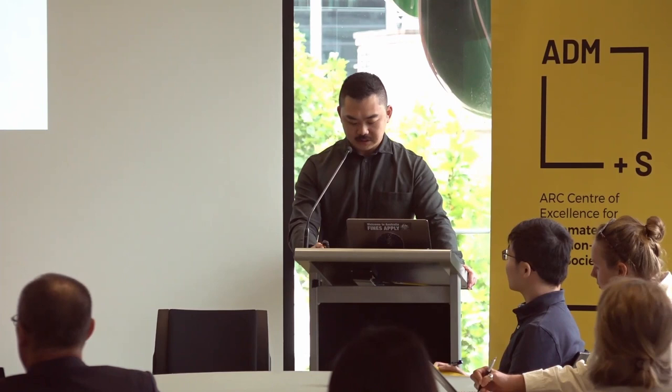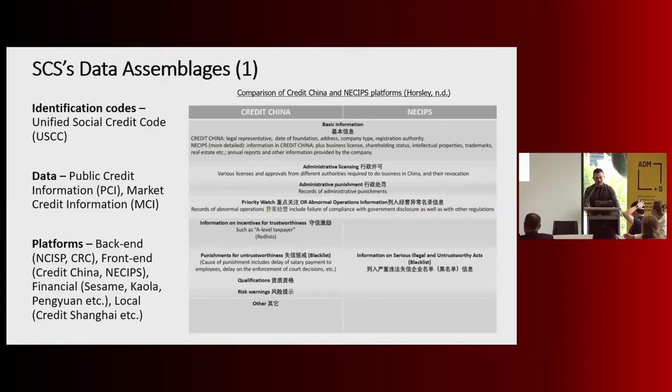My first part is just on contextual material. A big part of the social credit system is the unified social credit code — an identifier building on previous business registration numbers, government identification numbers, and social security numbers. I'm listing out the components I'm describing of these data assemblages, which we're using for our empirical analysis.